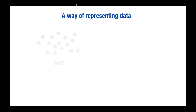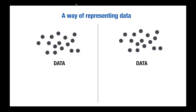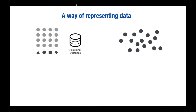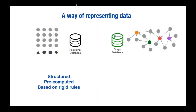When we talk about graphs, we talk about a way of representing data. This could be done by representing data in a table as you would in a relational database, which is good for projects that are very structured, pre-computed, and where the premises don't change much. A graph, on the other hand, represents data in a way that naturally relates to each other, and this is how it's stored in a graph database. Graph databases are useful for projects requiring high flexibility, real-time querying, and highly contextual engagement sessions.